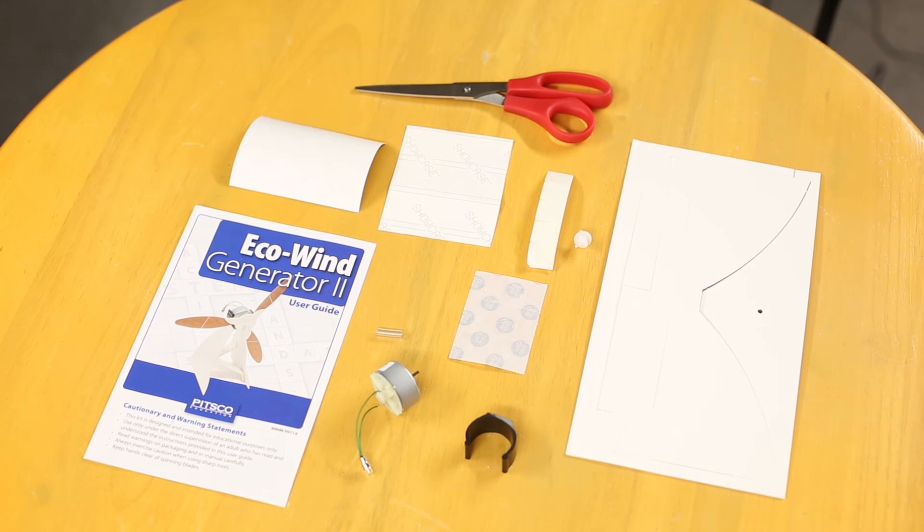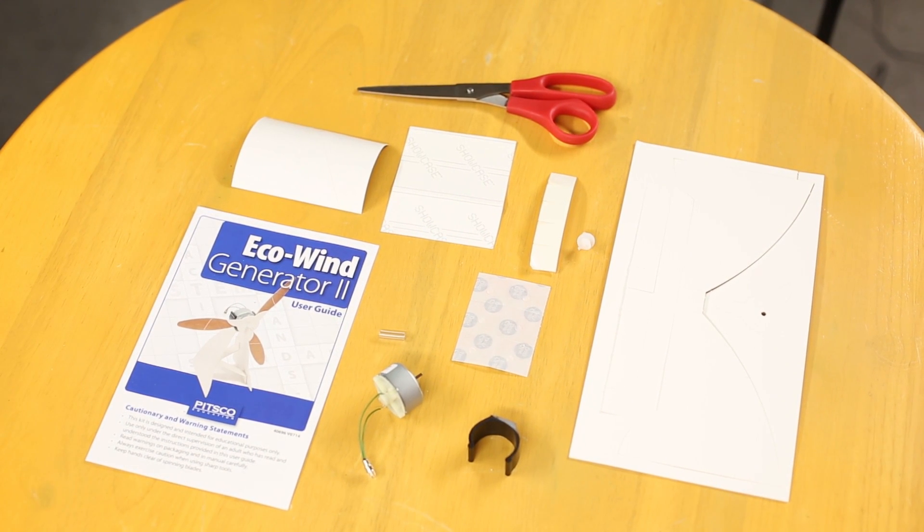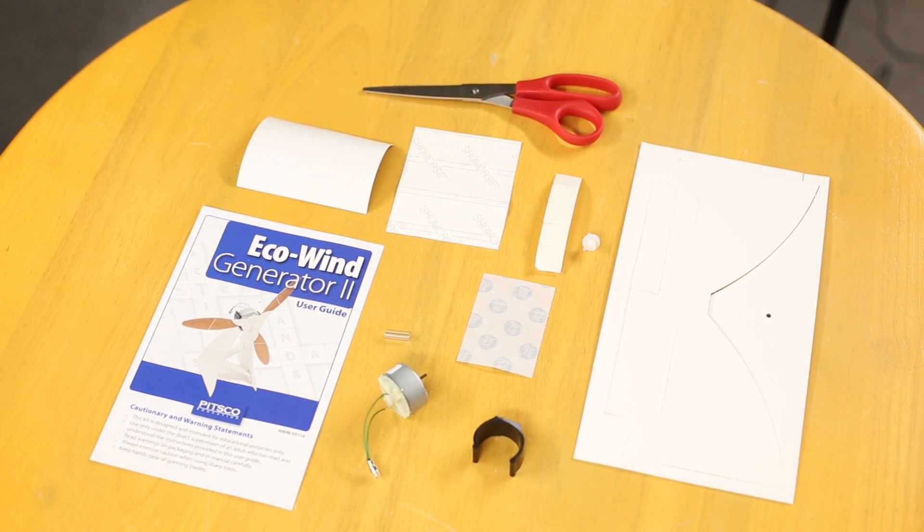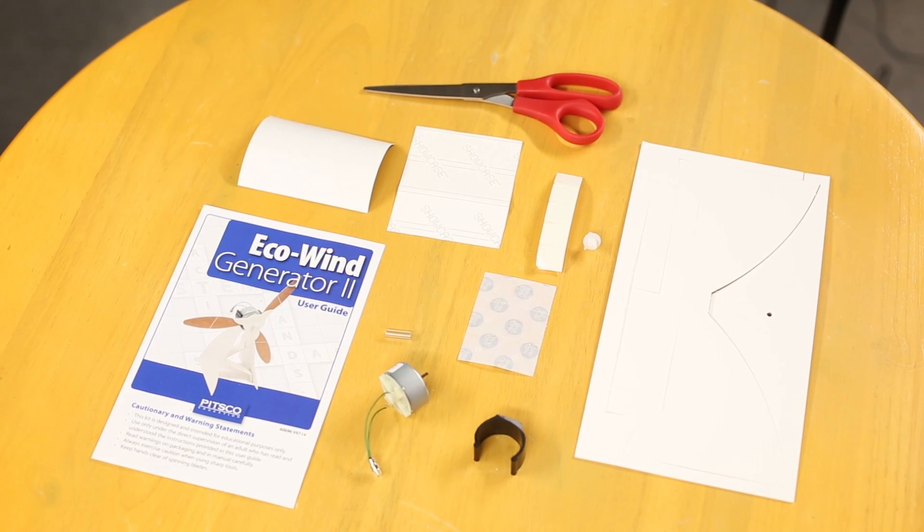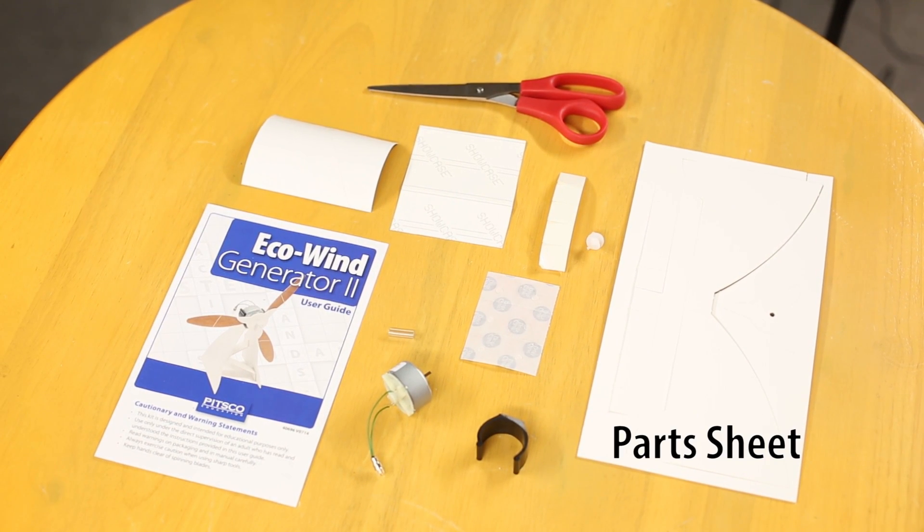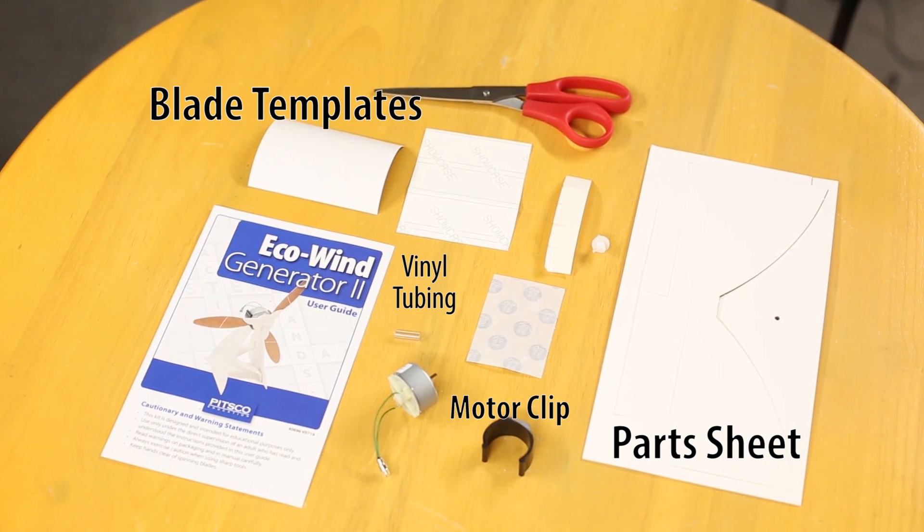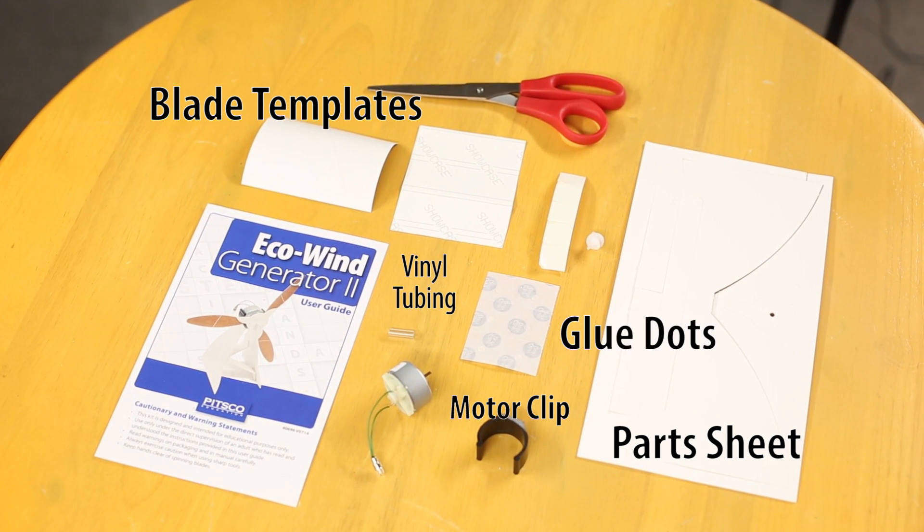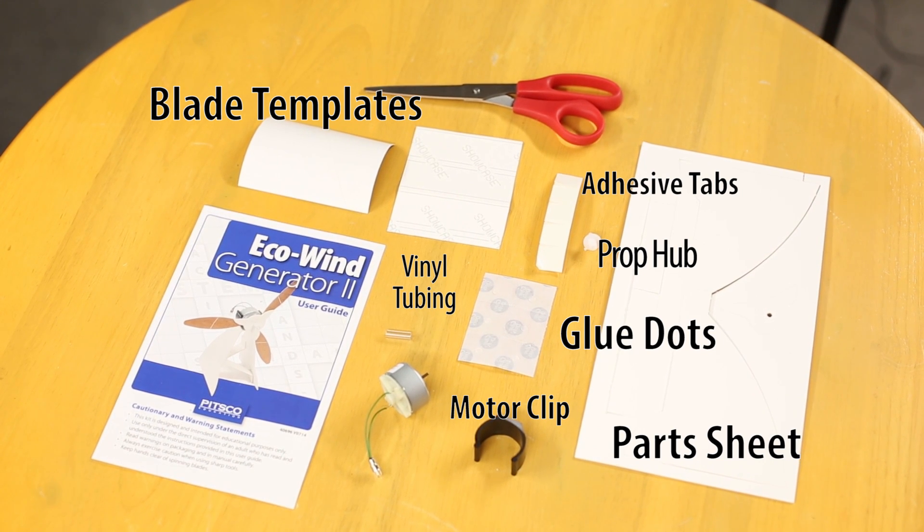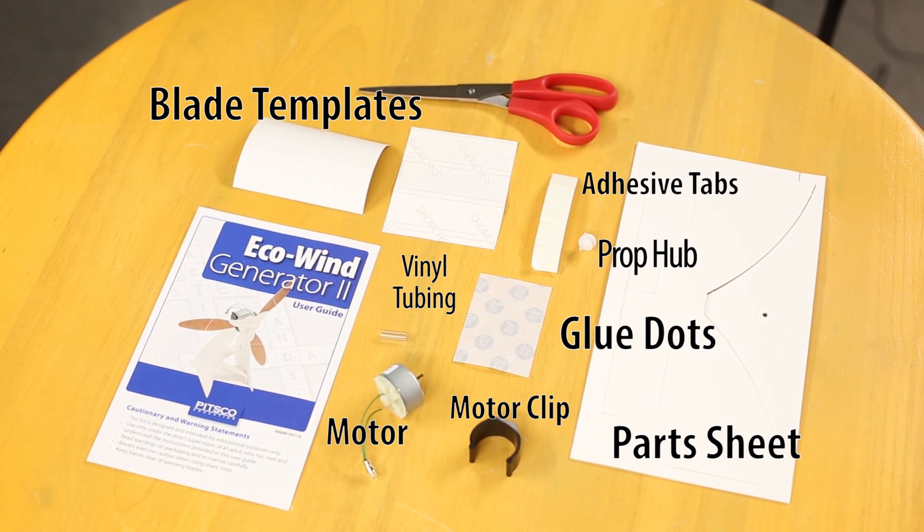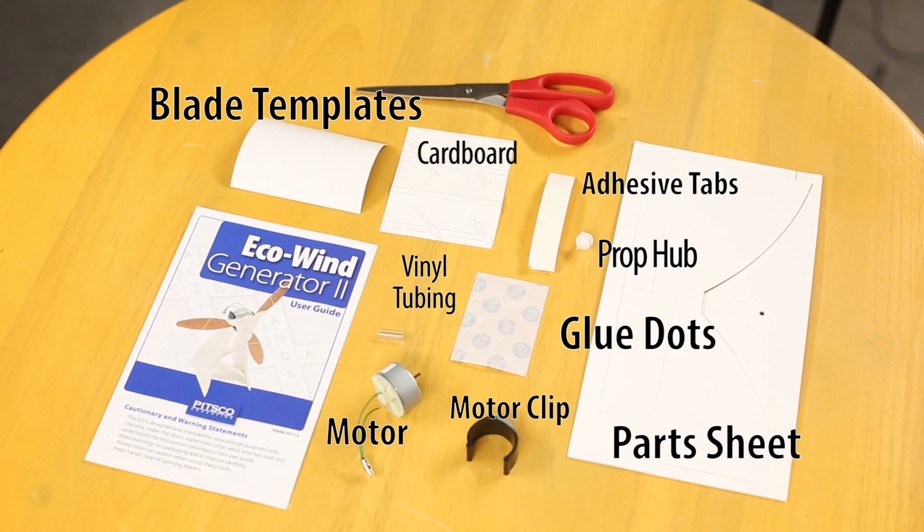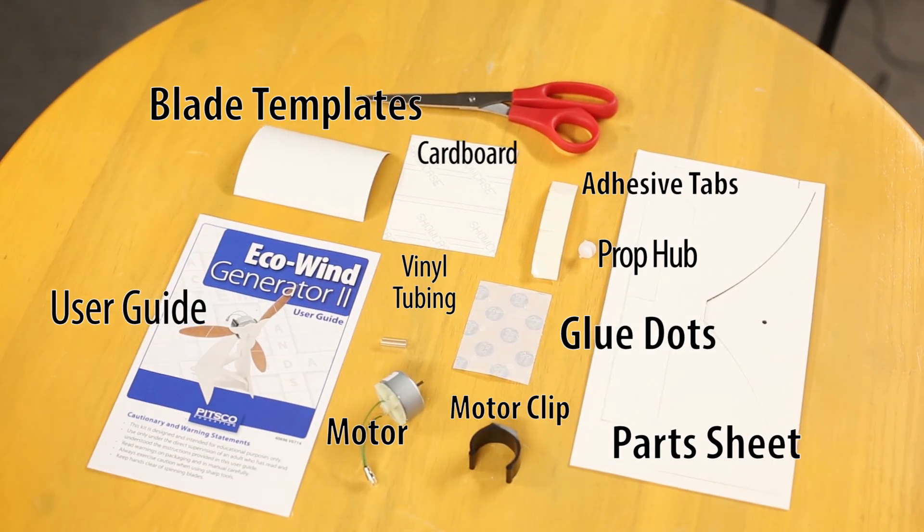Spread out on our table here are all the pieces that come in the Eco Wind Generator 2 kit. We have a sheet of die cut cardstock parts, a motor clip, a blade templates sheet, small vinyl tubing, six glue dots, prop hub, five self-adhesive foam tabs, a motor with pre-soldered wires, a cardboard half tube, and the user guide.